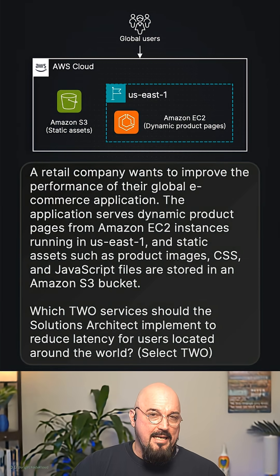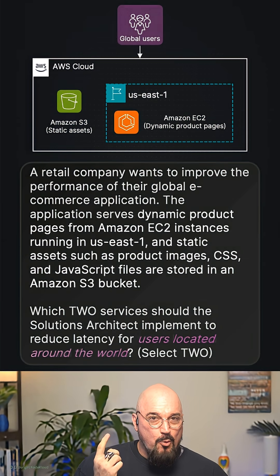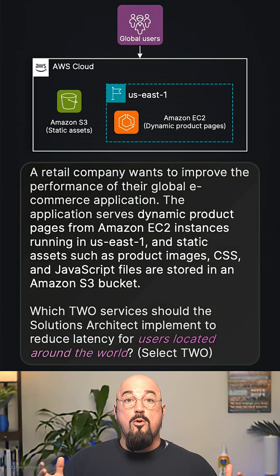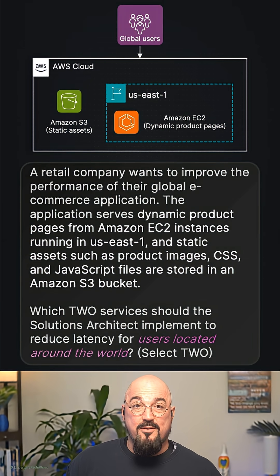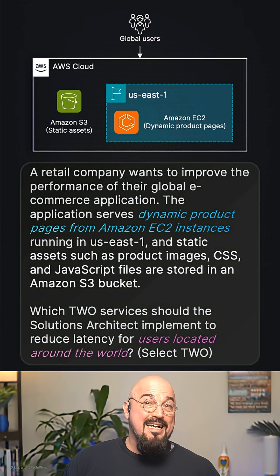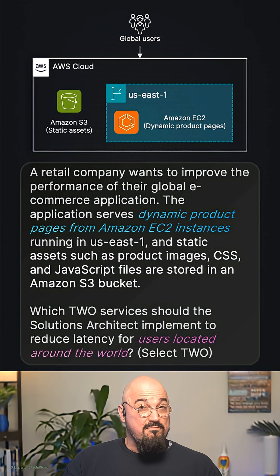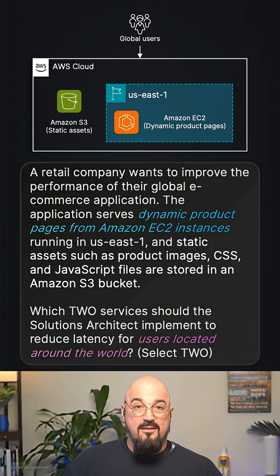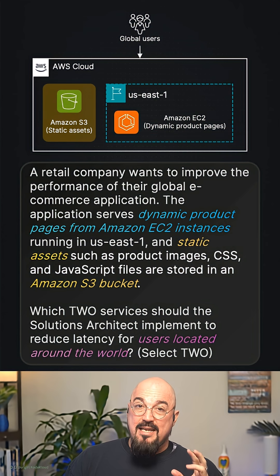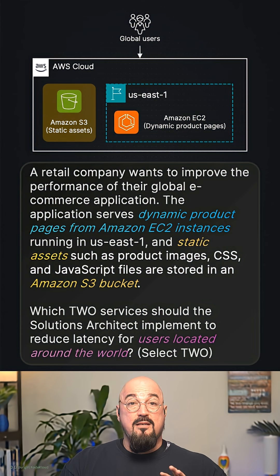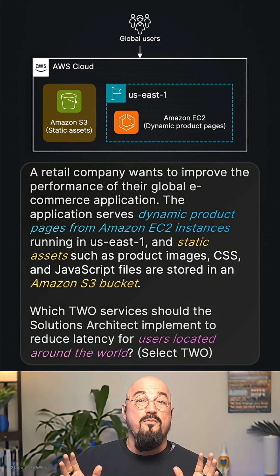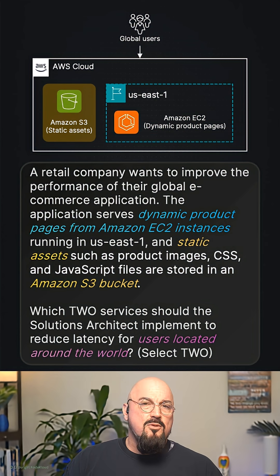Let's identify the key hints. One: global users — we need worldwide latency reduction. Two: dynamic content from EC2, which can't be cached easily. Three: static assets from S3 — images, CSS files, JS — these are very cacheable.